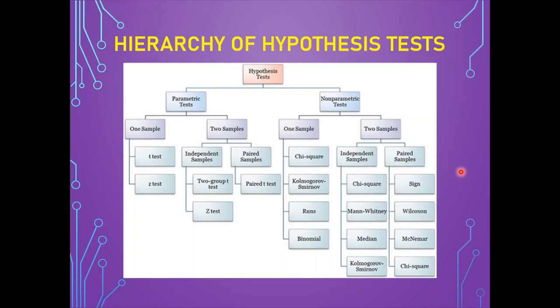Choosing between parametric and non-parametric tests is not an easy task for researchers. If information about the population is completely known by way of parameters, the parametric test can be used. Whereas if there is no knowledge about the population and it is needed to test the hypothesis on the population, the non-parametric test can be used based on the distribution of the data.